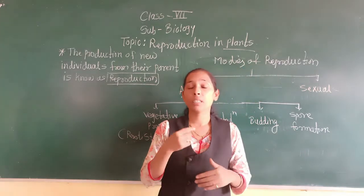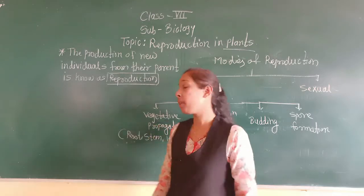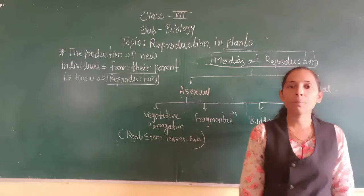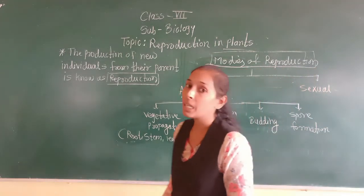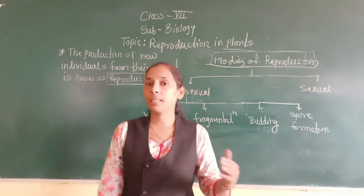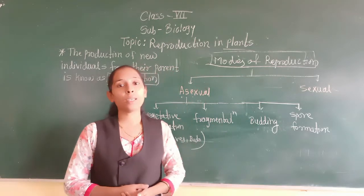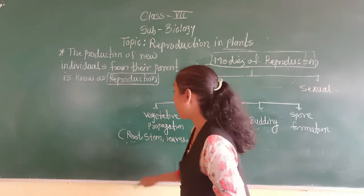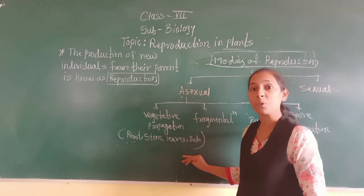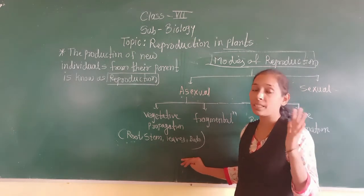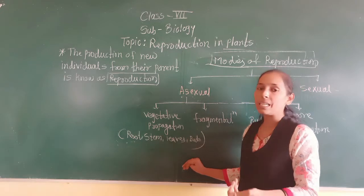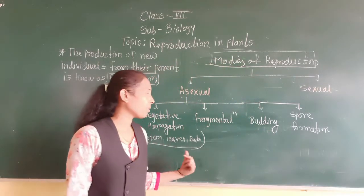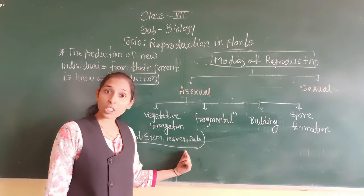Basically, plants get reproduced with the help of different types and methods. Before that, in the sixth standard you discussed about the parts of a plant — you discussed deeply about roots, stem, and leaves. Also, you discussed about the buds and nodes which are present on the stem. All these are the parts of a plant which are called vegetative parts.